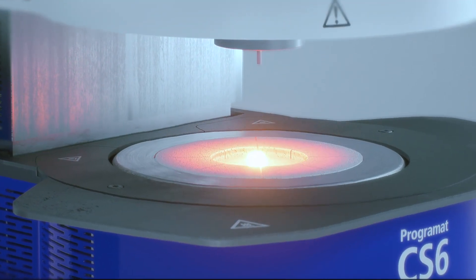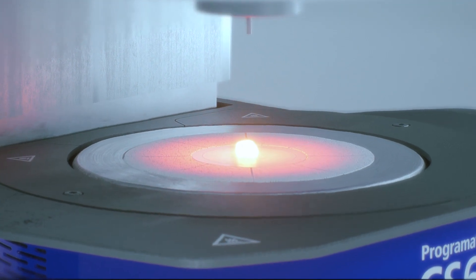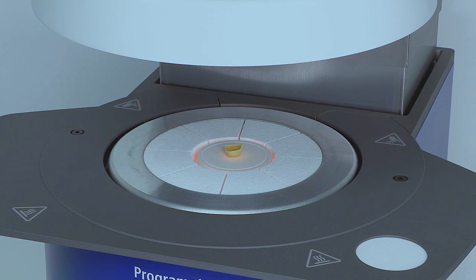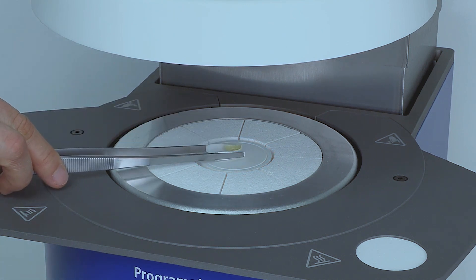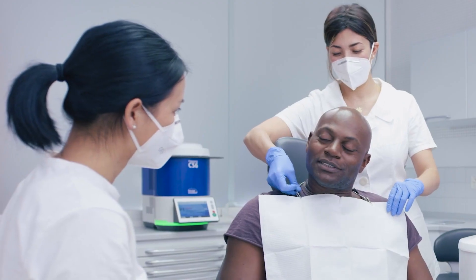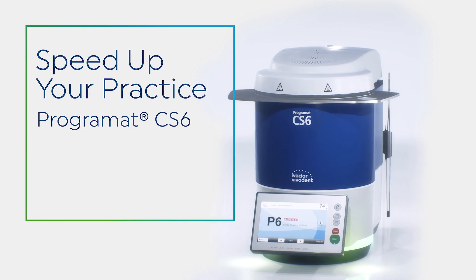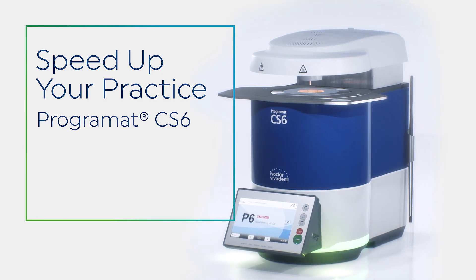PROGRAMAT CS6 is a game changer for the quick crystallization and sintering of your chair side restorations. Its dependable and proprietary technologies ensure that every case is quickly and consistently completed so you can focus on your patients, not your furnace. Speed up your practice with the PROGRAMAT CS6.